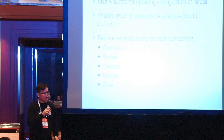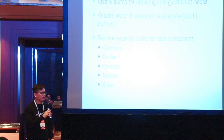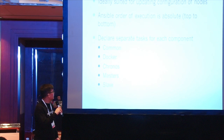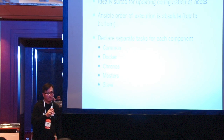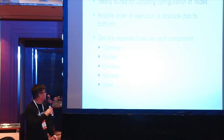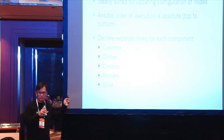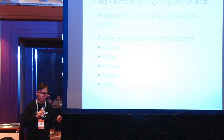Ansible is essentially a batch file where the order of operations is guaranteed top to bottom, and you can declare separate tasks for each component. We were able to create separate tasks for each of the pieces — one for Common, one for Docker, Chronos, Masters, and Slaves. That's how we're able to specifically only install the pieces that belong on each node.